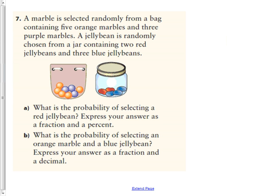Question 7 says, if marble is selected. So, what is the probability of selecting a red jelly bean? Express your answer as a fraction and a percent. Okay. So it says, what is the probability of a red jelly bean? You have 2 possibilities out of a 5. Okay. And that means that as a percentage, that is, as a decimal, it's 0.4. As an equivalent fraction, that's 4 tenths. As an equivalent fraction, it's 40 hundredths. And as a percent, it's 40%.